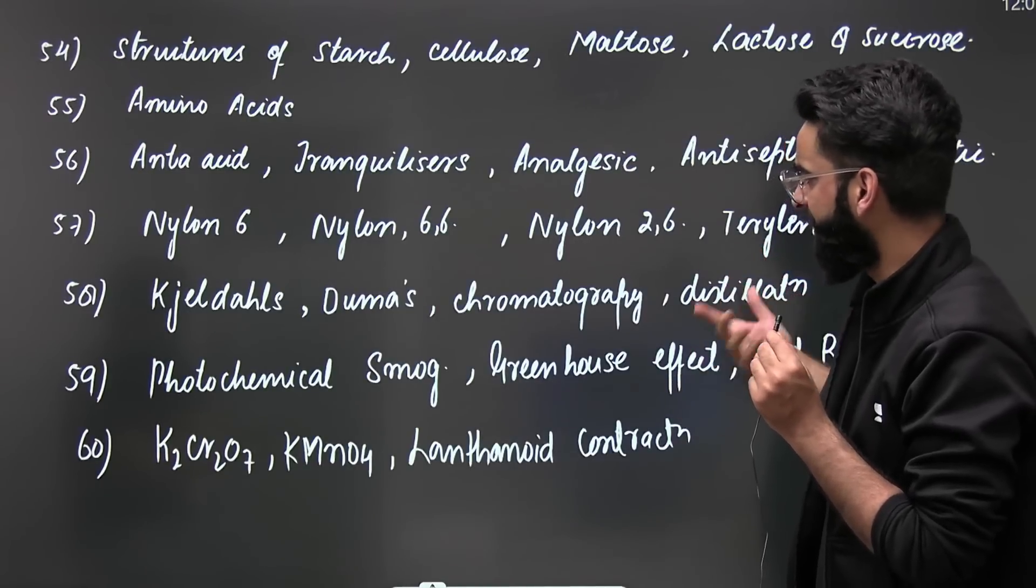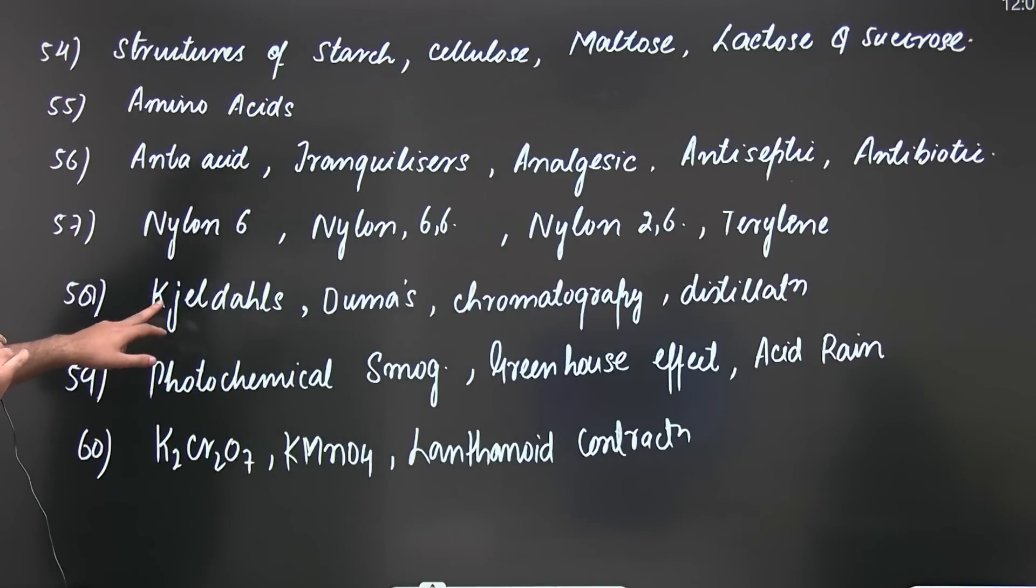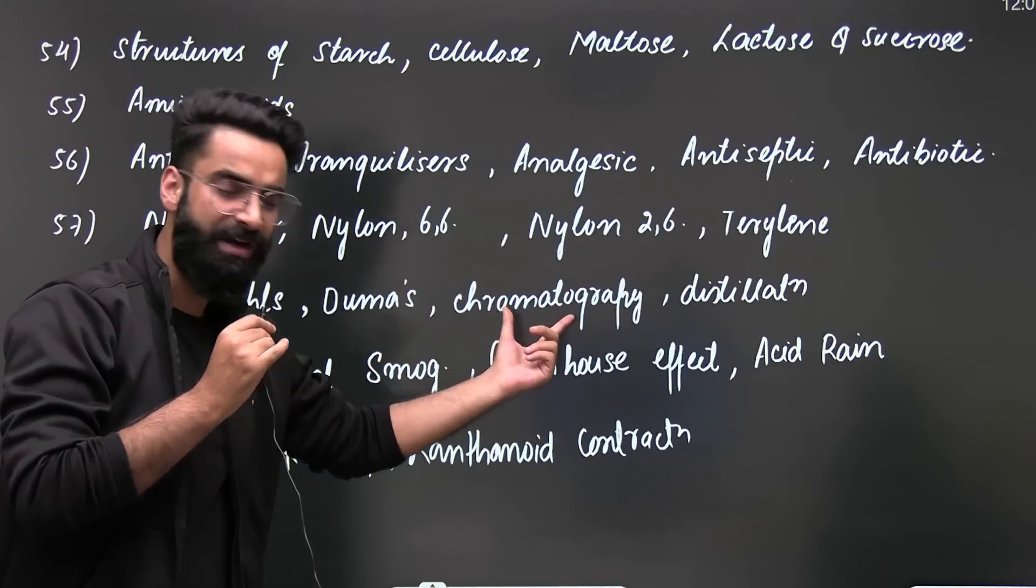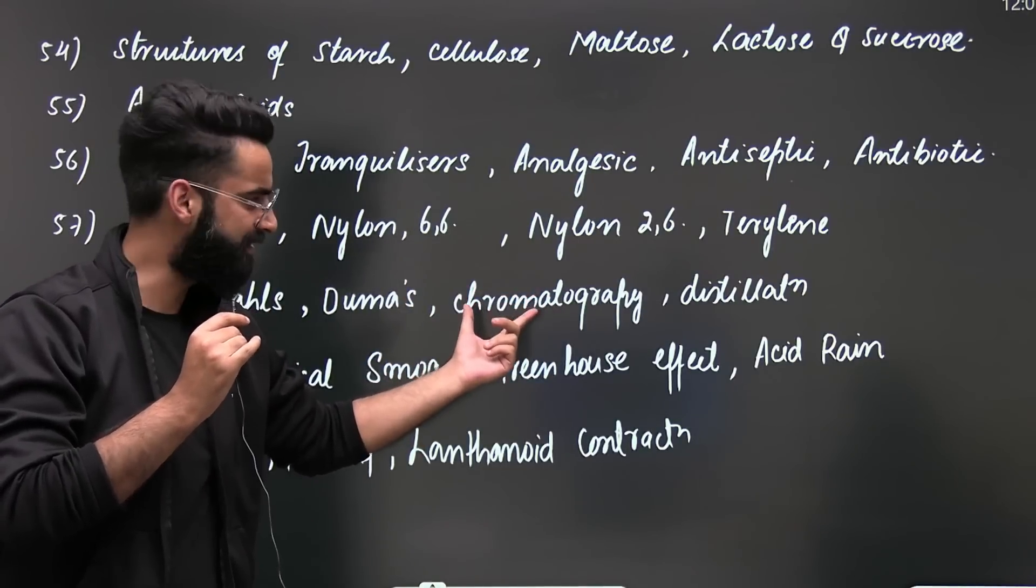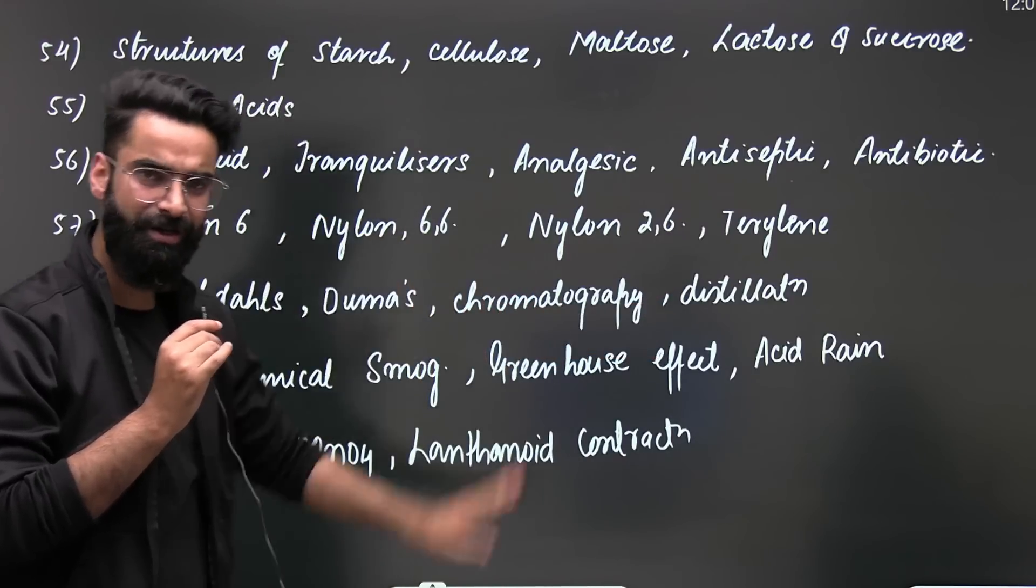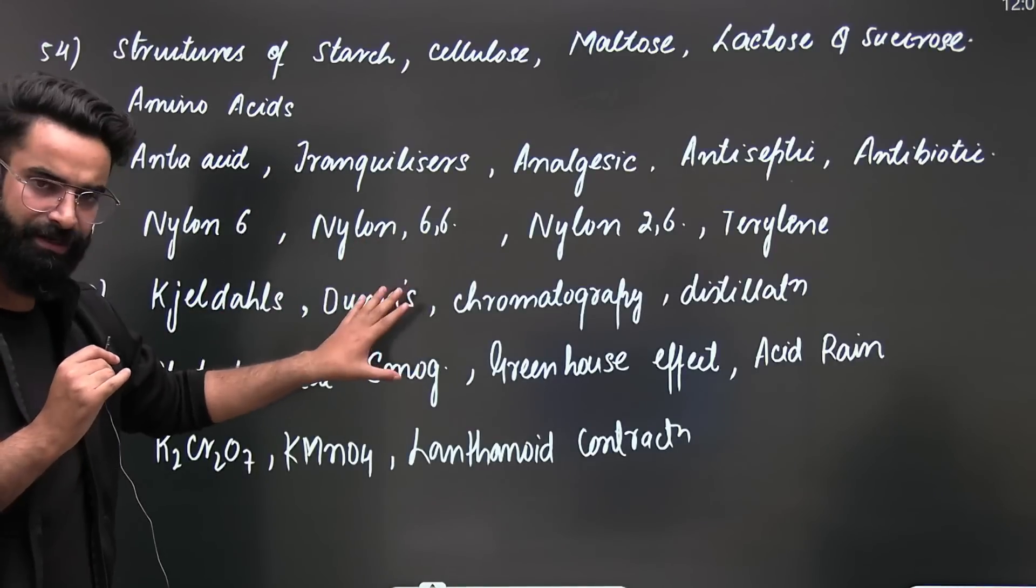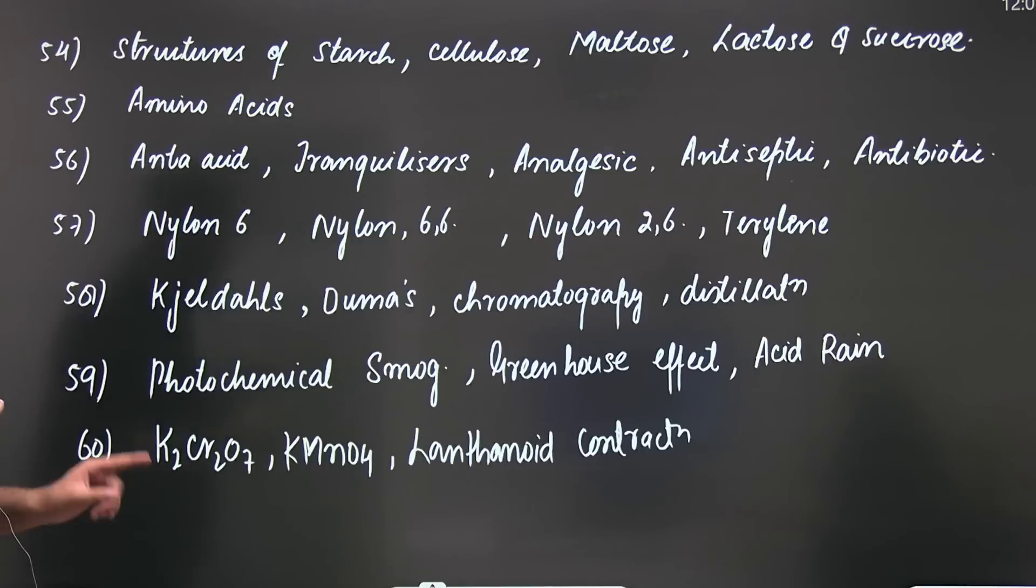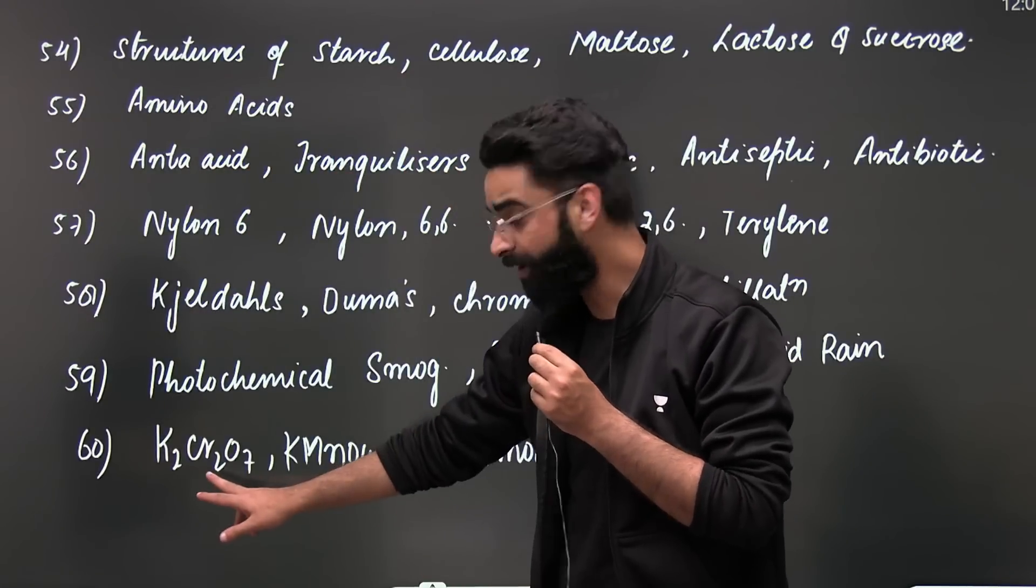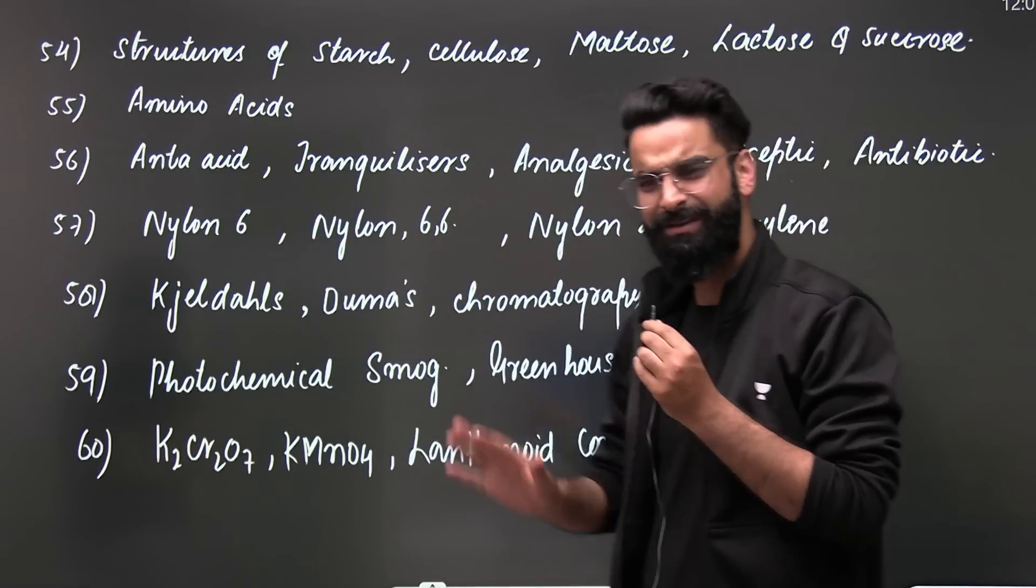Then you have got some topics from purification as well: one is Kjeldahl's method, Dumas method, and chromatography. Need not to be discussed in detail, but have a look on this as well. Then you have got distillation part, which you will focus on more. Similarly, photochemical smog, greenhouse effect, and acid rain - again three important topics. From your d and f block elements, go for the compounds like K2Cr2O7, KMnO4, and lanthanoid contraction.